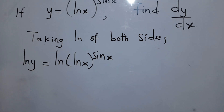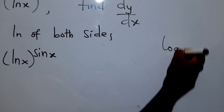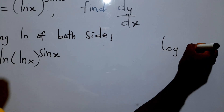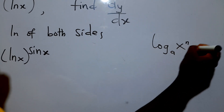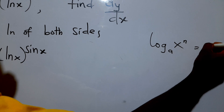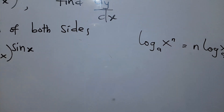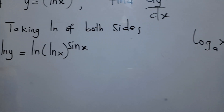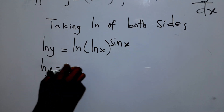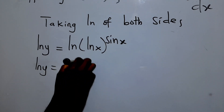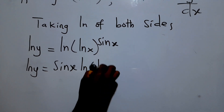From here we can simplify using the law of logarithms, which states that log of a quantity raised to exponent n equals n times log of that quantity. So we can say this becomes ln(y) equals sin(x) times ln(ln(x)).